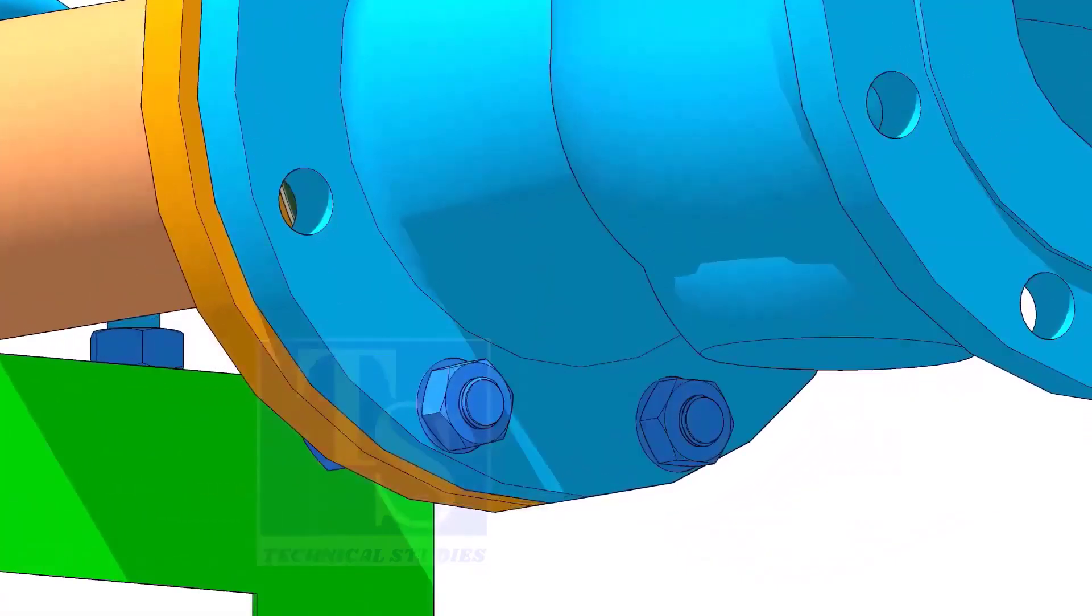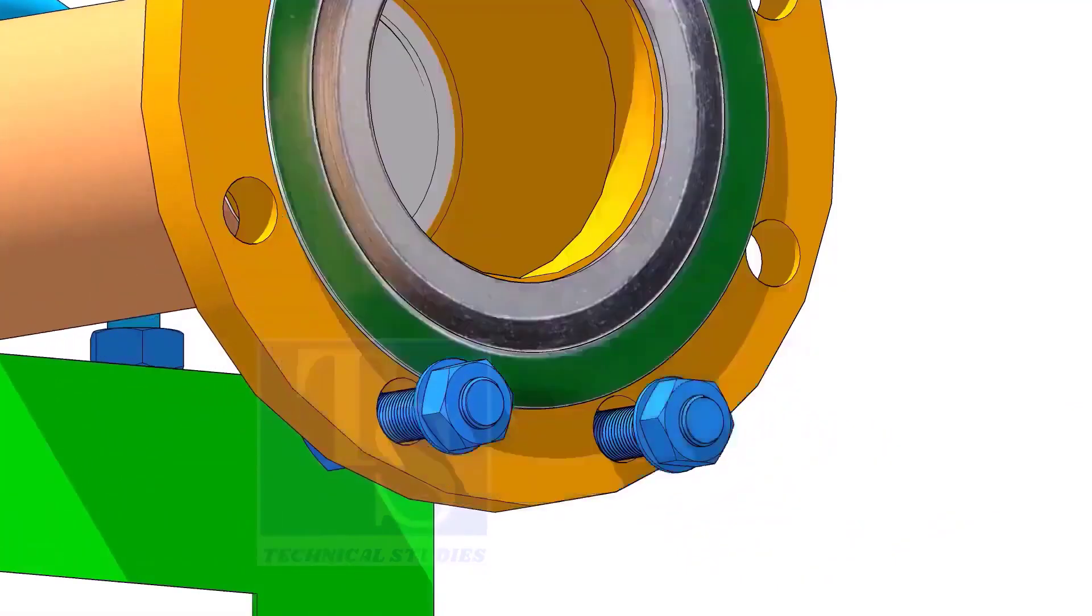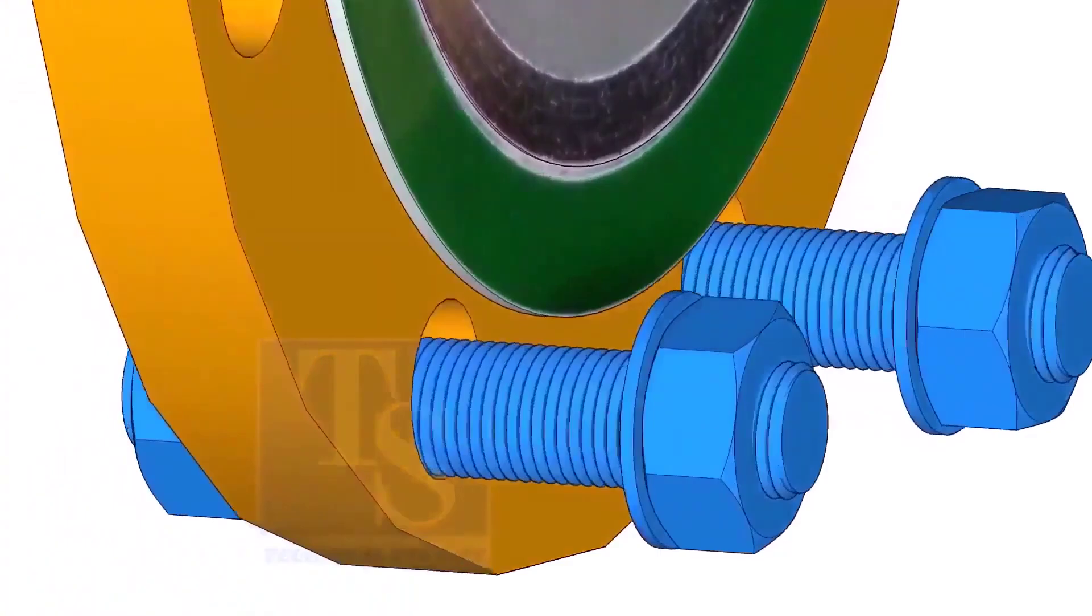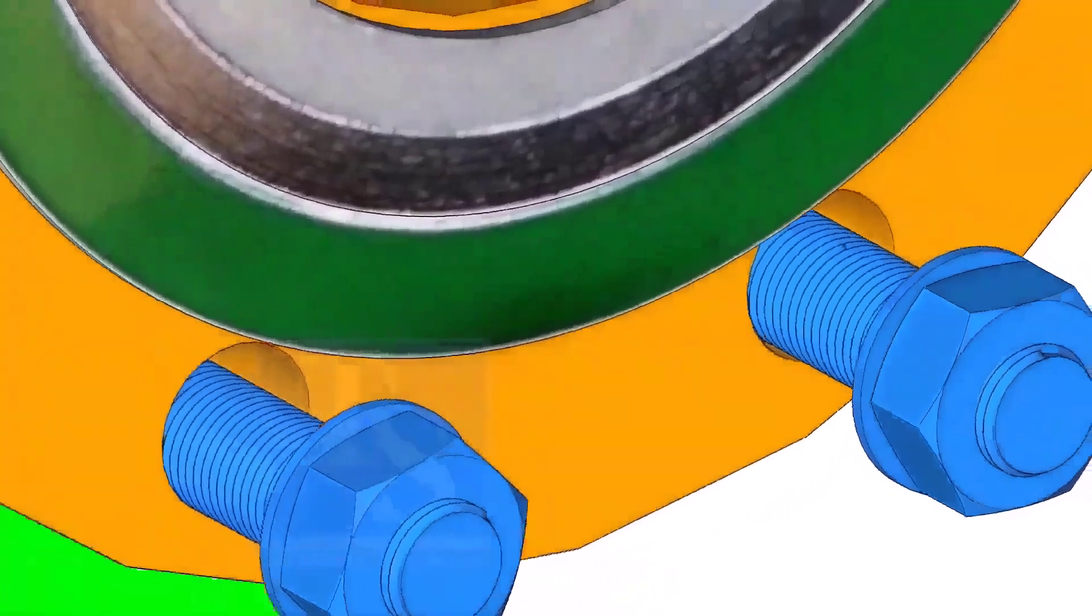Put the gasket in between the flanges. You will notice the gasket sits eccentric to the flange face because of the clearance between the raised face outer diameter and bolts.